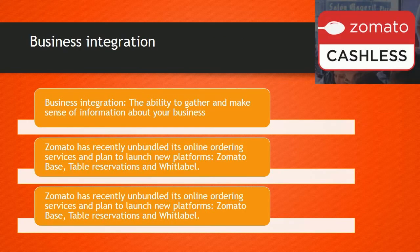Zomato, as an O2O services company, has also recently unbundled its online ordering services, and plans to launch new platforms like Zomato Base, Table Reservations, and Y2Label. Besides integration with existing restaurant partners on cashless payment, it will integrate with Next Table on reservation services. Such implementations require large business integration. Business integration refers to the ability to gather and make sense of information about business. Zomato encompasses a set of techniques, processes, and technologies designed to enable gaining superior insight and understanding of its restaurant searching business.